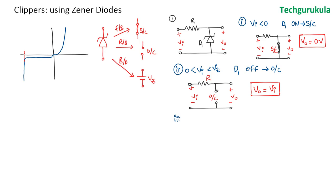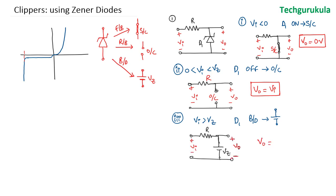In the third case, where VI is greater than the zener breakdown voltage, D1 is still reverse biased but has entered the breakdown region. We have to model it as a voltage reference circuit, so the output voltage would be equal to Vz, the zener breakdown voltage.